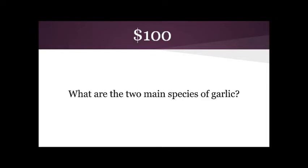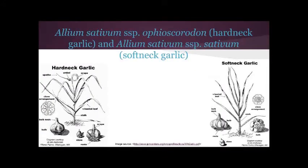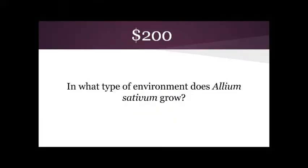Biological description for 100: What is hard neck and soft neck? Biological description for 200: What is dry summers, some rainfall, and moderate winters?